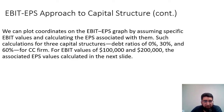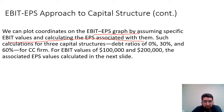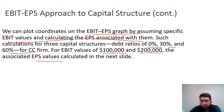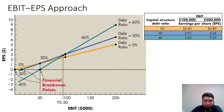Let's look at the same example that we have been doing and plot it. We can plot coordinates on an EBIT-EPS graph by assuming specific EBIT values and calculating the EPS associated with them. Such calculations for three capital structure debt ratios of 0%, 30%, and 60% for CC firm have already been done in the last session. For EBIT values of $100,000 and $200,000, the associated EPS values are given as follows.